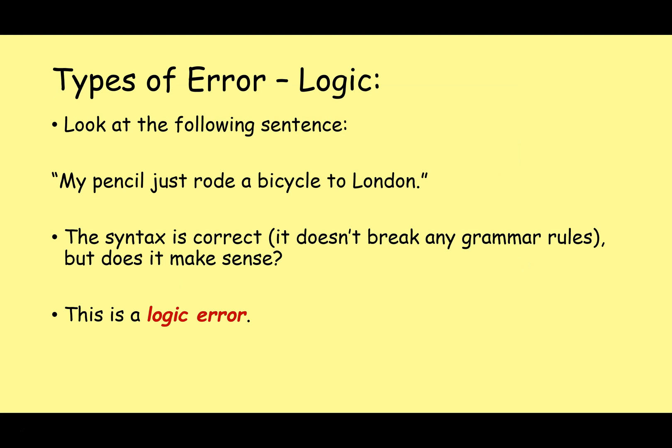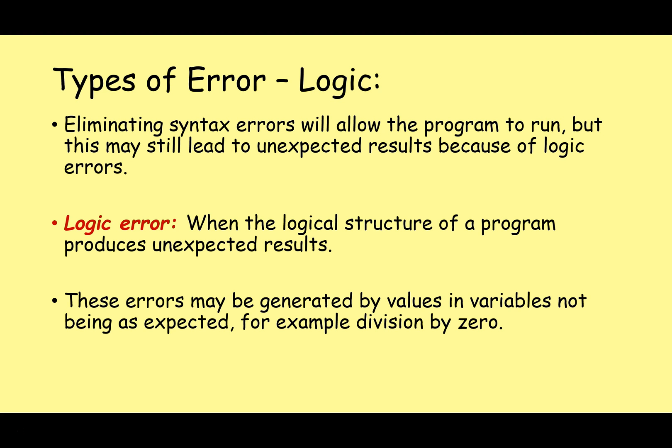Let's take a look at the other type of error now, which is logic errors. So let's take a look at this sentence here: 'my pencil just rode a bicycle to London.' This is syntactically correct, the grammar is fine, but let's face it, it doesn't make any sense. This is an example of a logic error. So eliminating all the syntax errors in our code will allow the program to run, but this may still lead to unexpected results because of logic errors. So definition of a logic error: when the logical structure of a program produces unexpected results. Essentially the program works, but it's not doing what the programmer wants it to do. These errors may be generated by values in variables not being as expected, for example you may have a division by zero error.